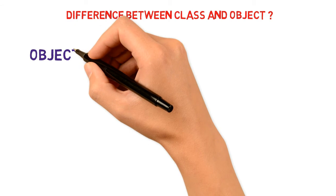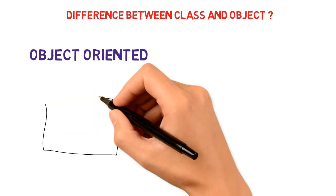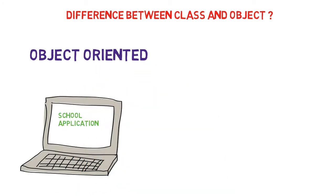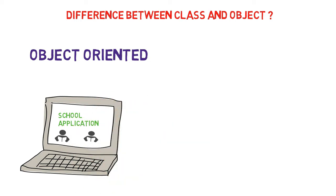Java is an object-oriented programming language and objects are like real-world entities. So let's say you have an application for a school. In this application we store and display the details of students, teachers, etc. These students and teachers are real-world entities, and that is what we call objects in Java.